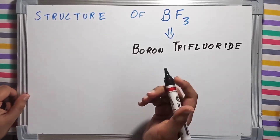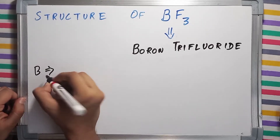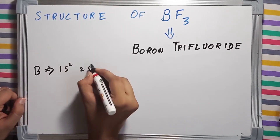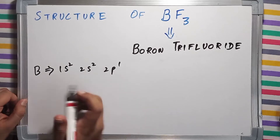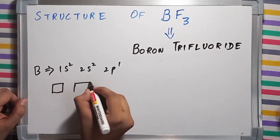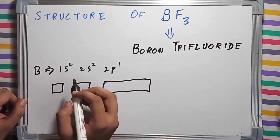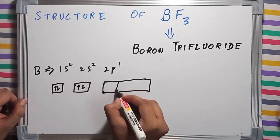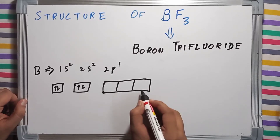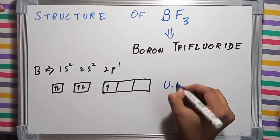Namaste everyone, we're going to draw the structure of Boron Trifluoride. The electronic configuration of boron is 1s² 2s² 2p¹. I'm drawing the orbitals of this electronic configuration — the 1s, 2s, and 2p subshells. In the 1s subshell it has two electrons, similarly in 2s it has two, and the 2p subshell has three orbitals — px, py, and pz — with a single electron.